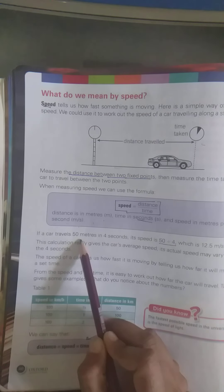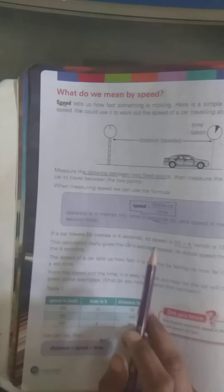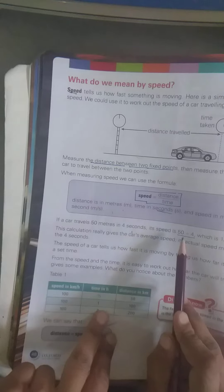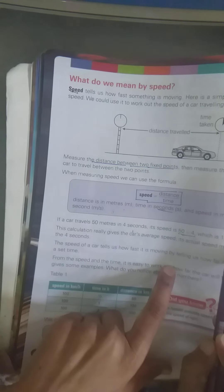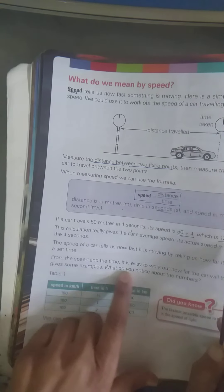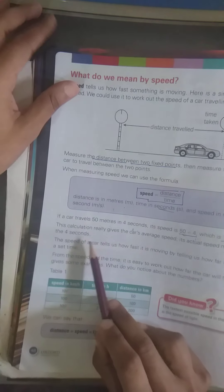Uske baad agar car travel kar rahi hai humare paas 50 meter 4 second mein, to iski speed kitnay hooghi hai humare paas? Jab hem 50 ko divide karhenge 4 ke saath, humare aa jahe ga answer 12.5. Yarni ke 12.5 joh hai, yeh distance itne time mein itna distance hua joh ke isne measure kiya hai.